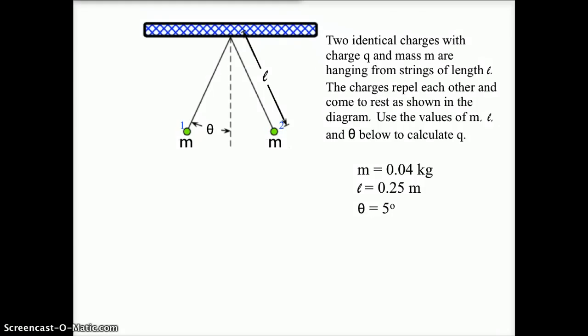Okay, I'm going to work through a solution of Coulomb's experiment. So we have two identical charges, 1 and 2. These have charge q and mass m, and they are each hanging from a string of length l. The charges are repelling each other and come to rest as shown in the diagram. Use the values of m, l, and theta given below to calculate a value for q.